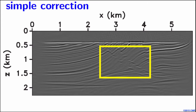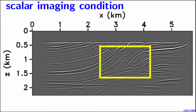However, in the areas highlighted by the yellow box, we can see that in areas with complex geology structures the image is still not well focused. Last year in the consortium meeting, we proposed an imaging condition to correct for the polarity reversal. Using that imaging condition, we are able to get this image shown here, and even in the area with complex geology structures we are able to get well-focused images.